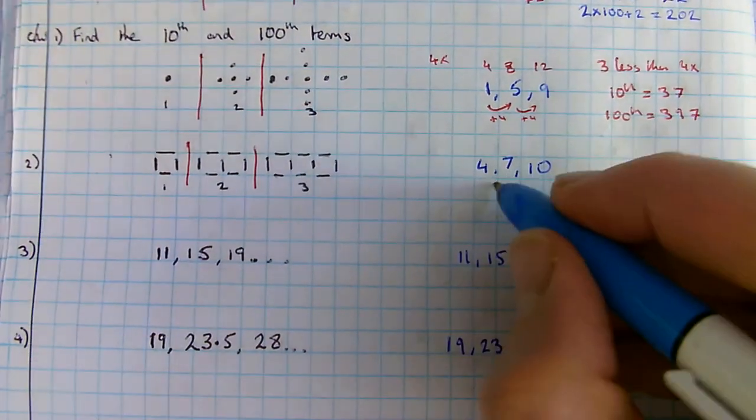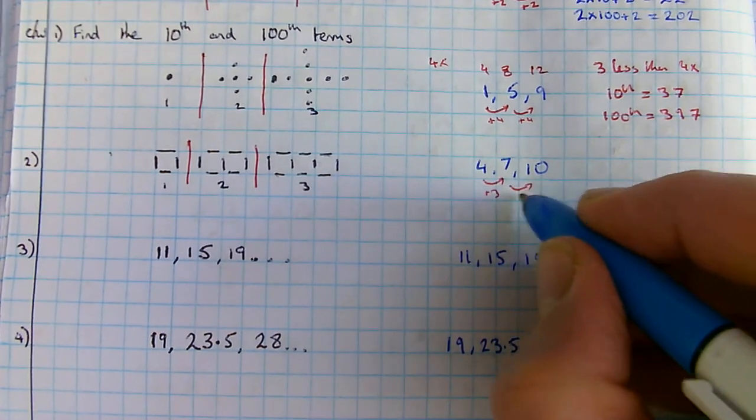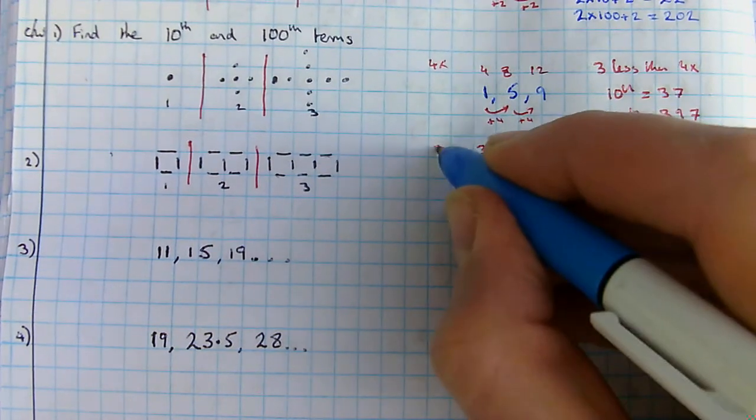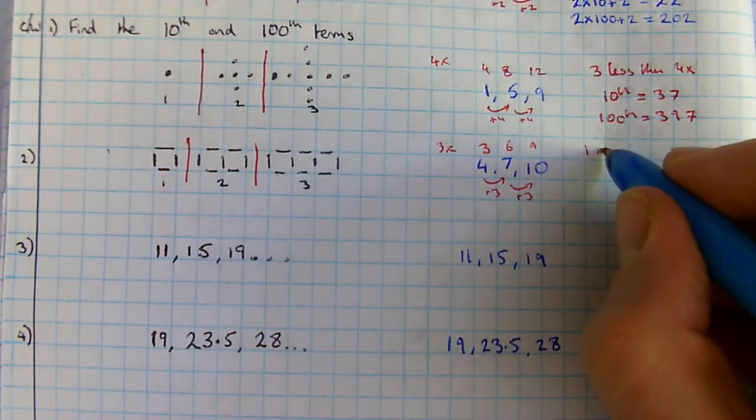Looking at the next one, I'm going up by three each time, so it must be related to the three times table. There's my three times table: three, six, nine. It's one more than three times table.